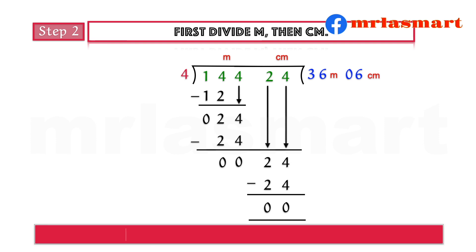Hence, 144 meters 24 centimeters divided by 4 equals 36 meters 06 centimeters.